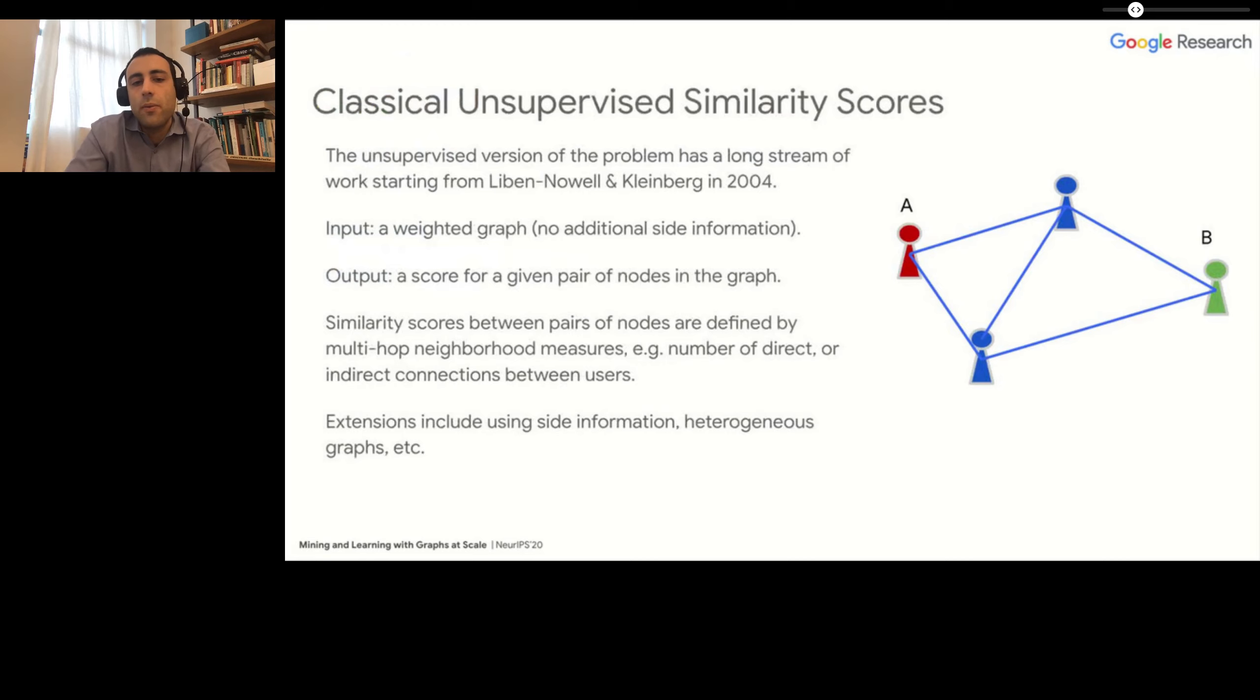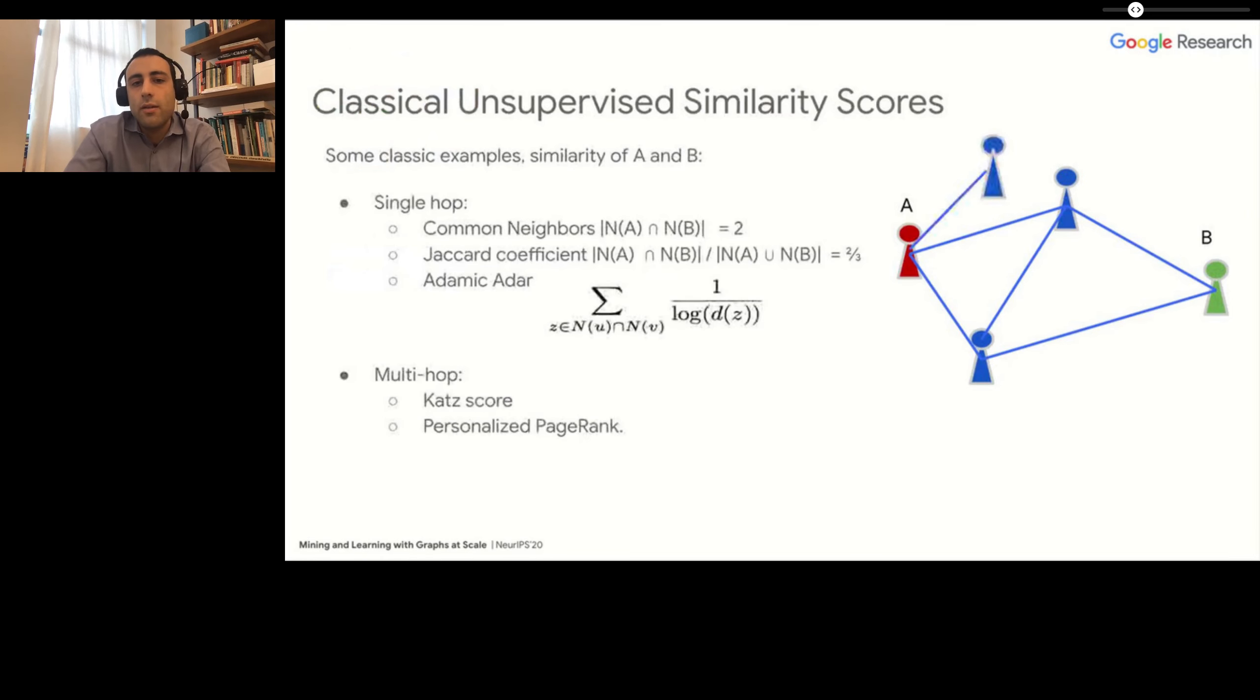Of course, there have been many extensions to this problem, including mining heterogeneous graphs and understanding the structure of the graph, not only in terms of topology but also of the attributes. But we will see today mostly classical definitions of the problem, including one-hop similarity scores like common neighbors, and multi-hop scores like personalized PageRank.